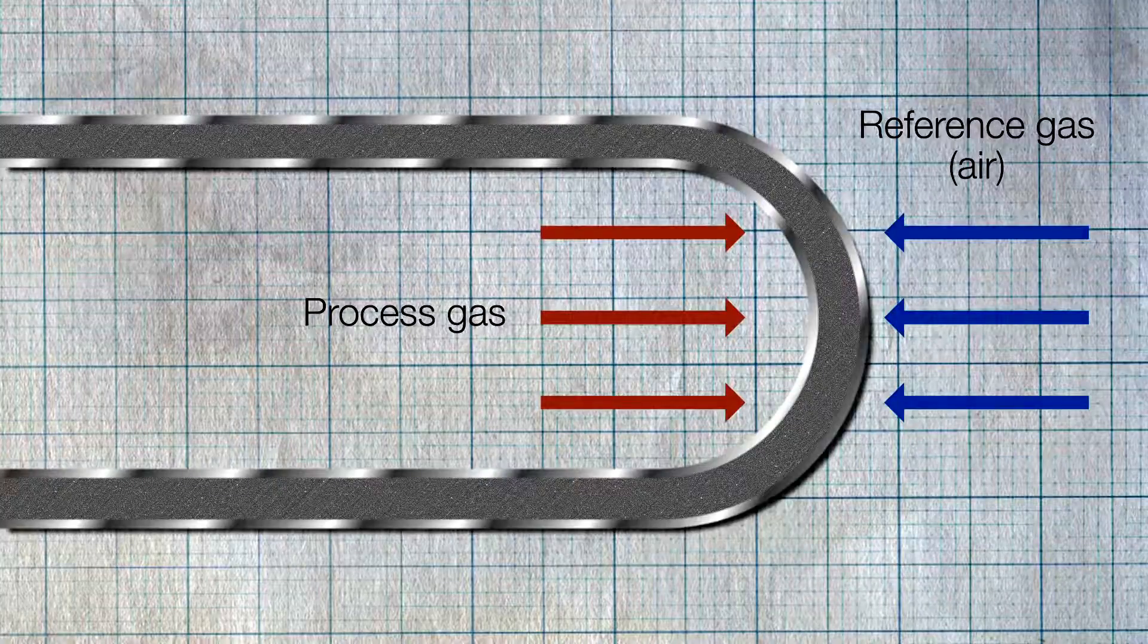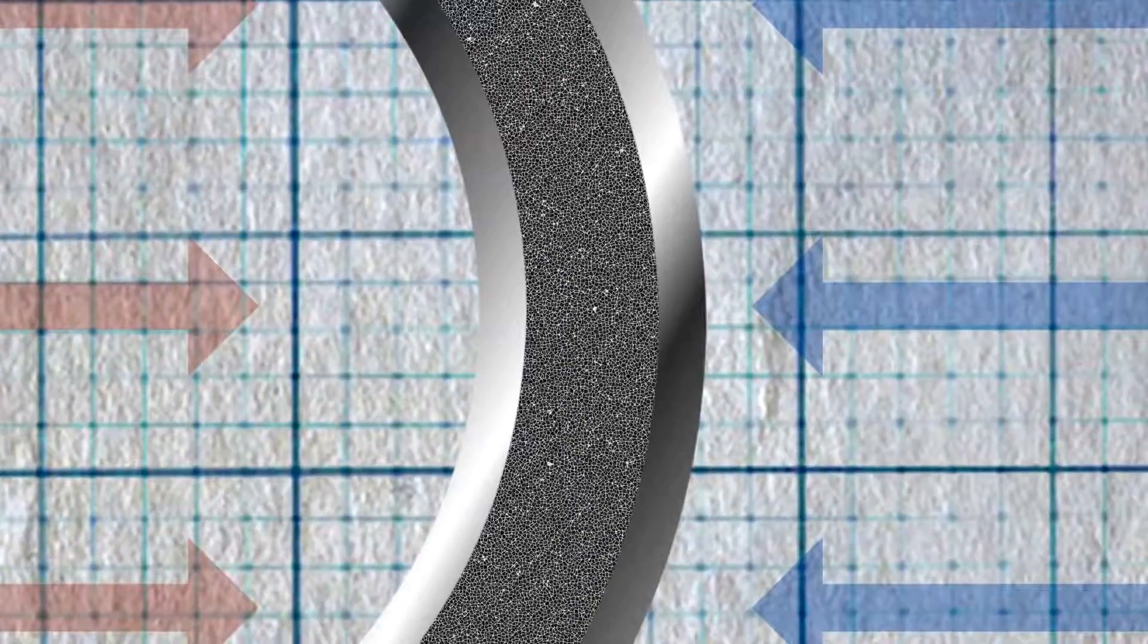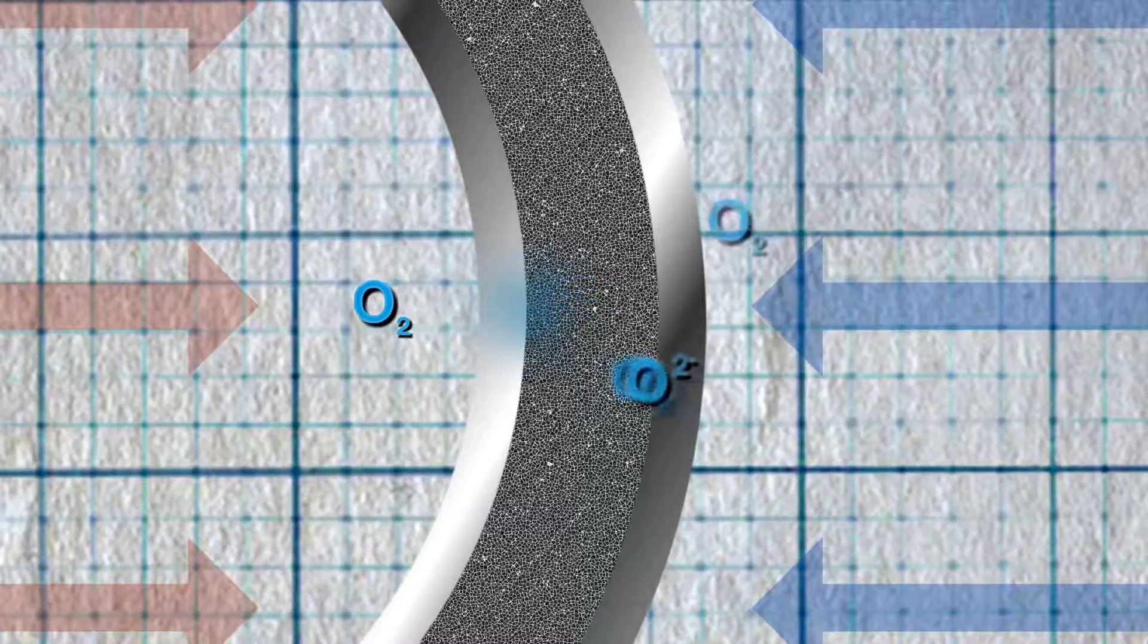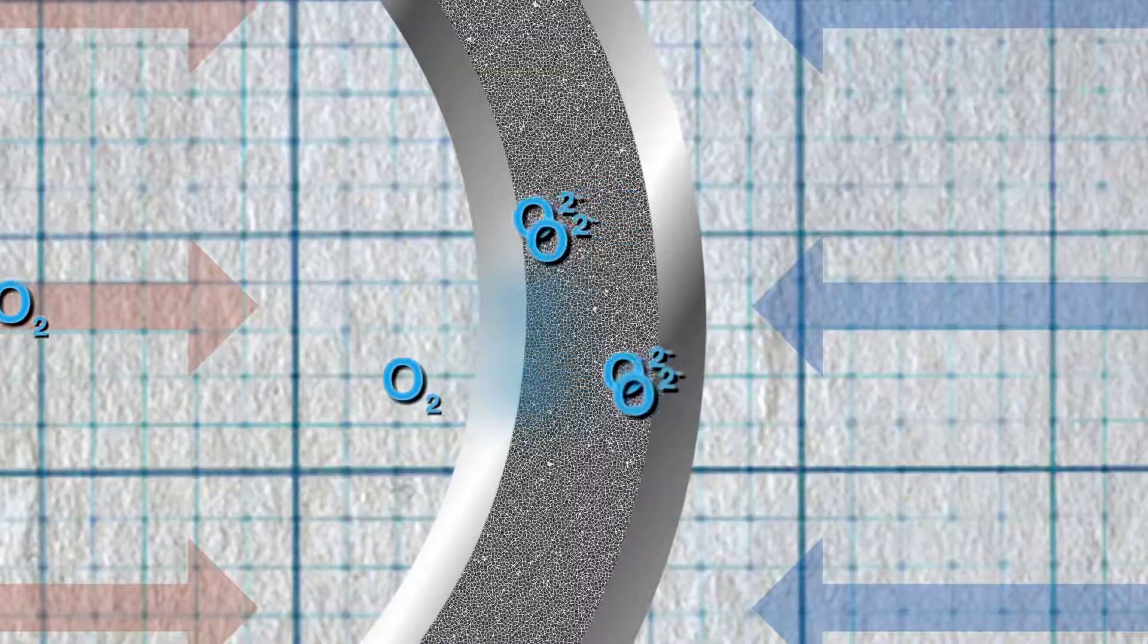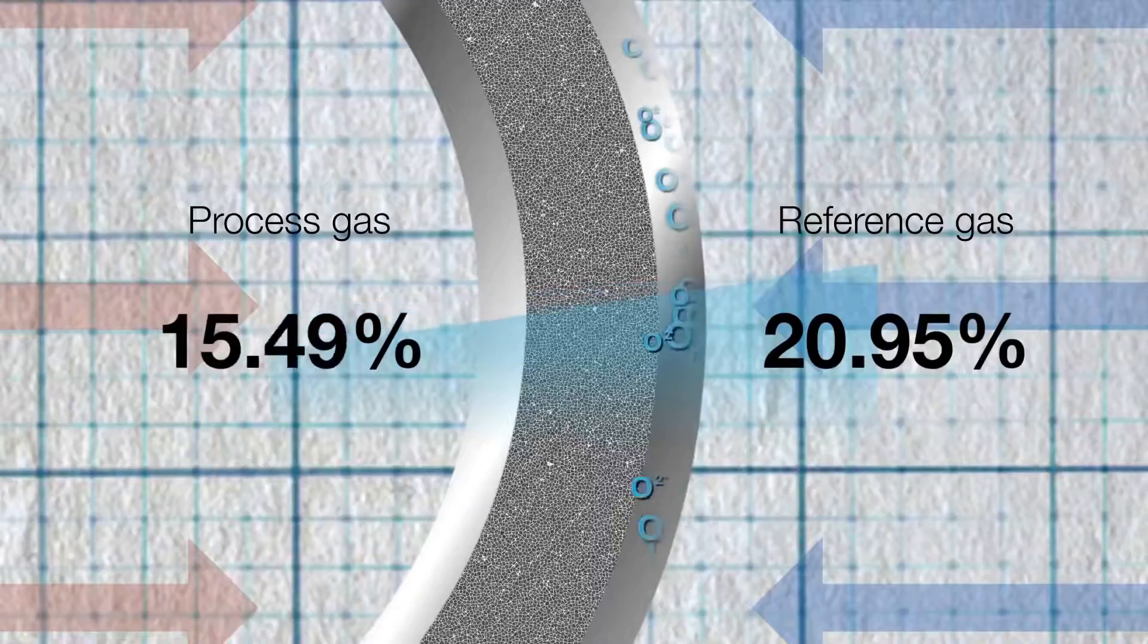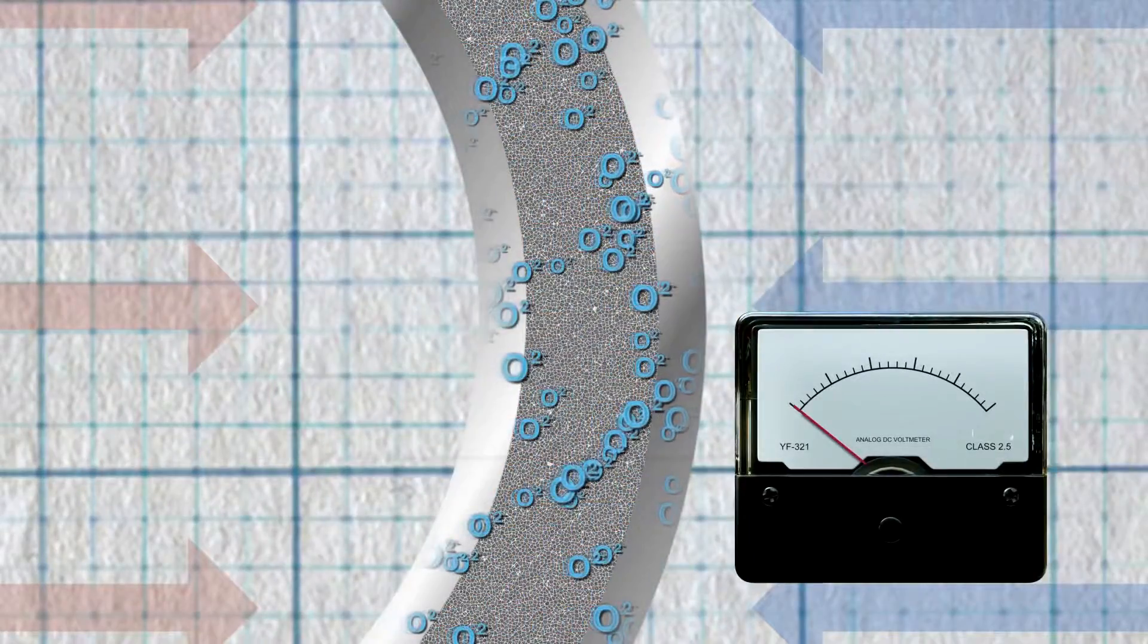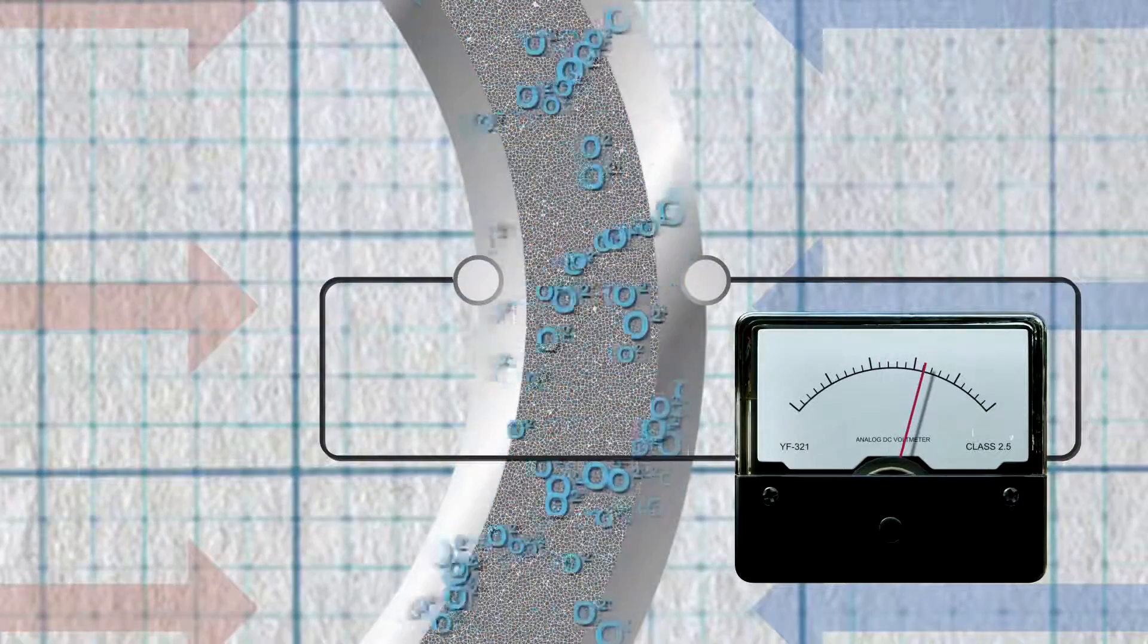When the concentration of oxygen is equal on each side, migration of the oxygen ions through the zirconium is zero. When concentrations differ, migration of the oxygen ions will increase as they try to re-establish equilibrium. The reaction at the two electrodes will differ, generating a corresponding potential difference. Using an appropriate device, this difference can be measured to produce a percentage oxygen concentration reading.